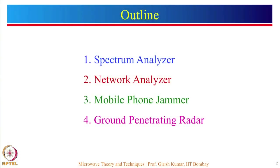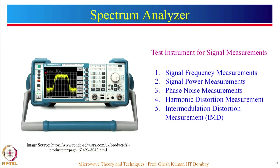We are going to discuss four different microwave systems. The first one is spectrum analyzer, the second is network analyzer, the third is mobile phone jammer or silencer, and the fourth one is ground penetrating radar which is GPR. Let us start with the first one: spectrum analyzer.